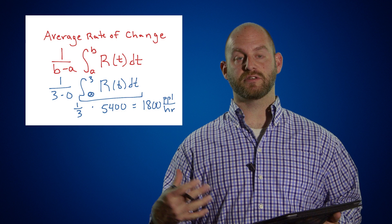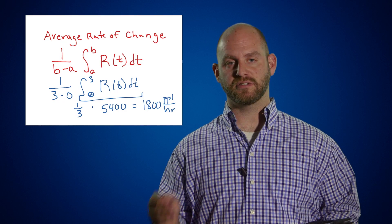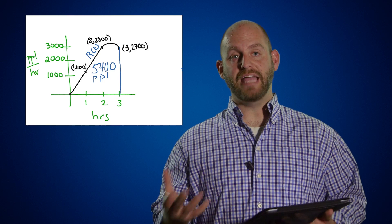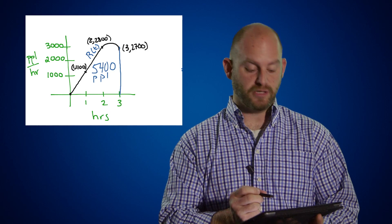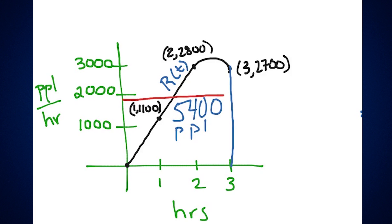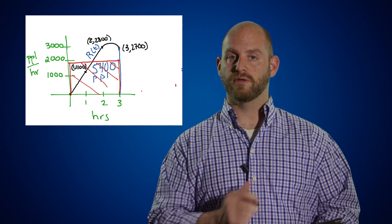The average rate of change formula gives us back another rate of change — one is instantaneous, telling us the exact rate at any moment, while 1,800 people per hour is the average over the three-hour period. If we graph that, it's just a constant function — a horizontal line at 1,800. Over the three-hour period, this makes a red rectangle: three times 1,800 equals exactly 5,400 people, the same value as our definite integral. So we see the relationship between the average rate of change formula and Part Two of the Fundamental Theorem of Calculus.